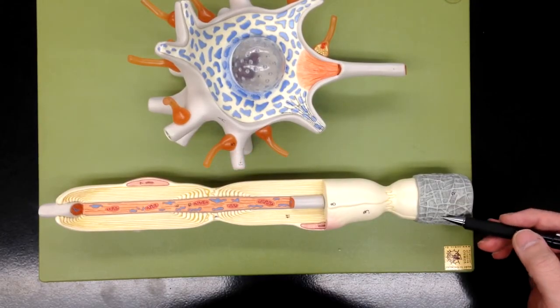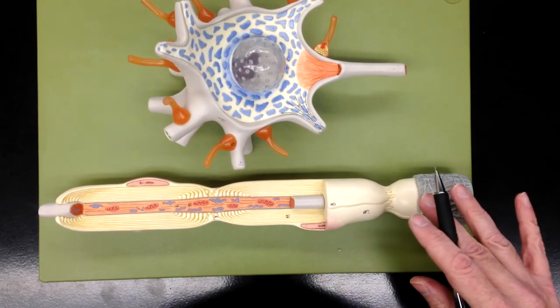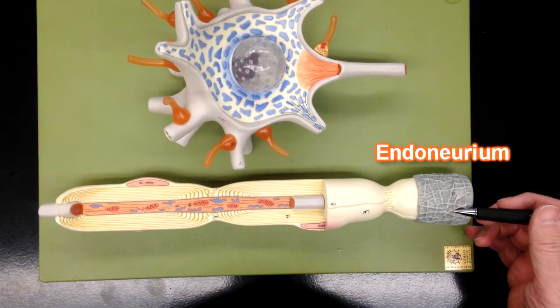This connective tissue around the axon is called endoneurium.